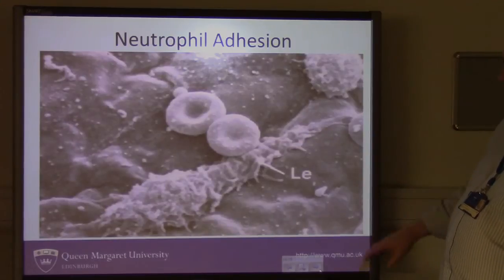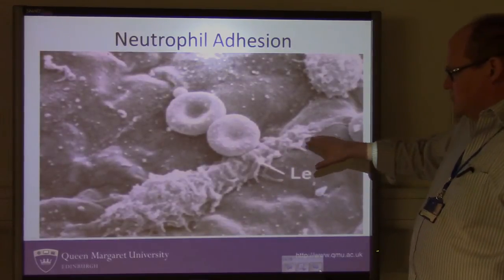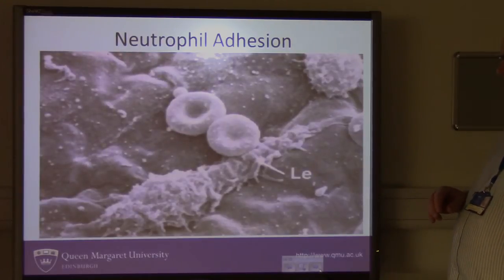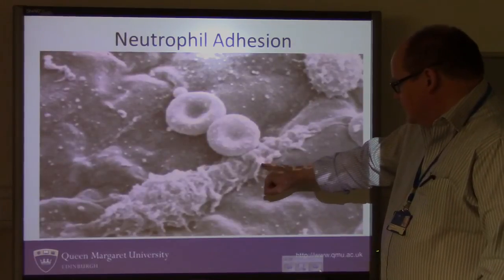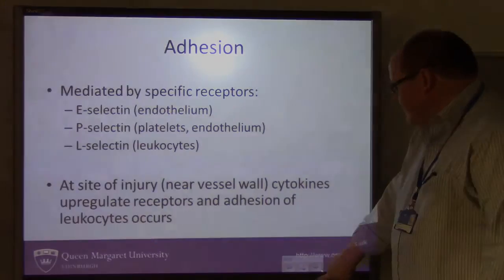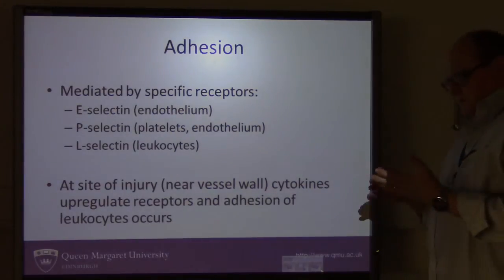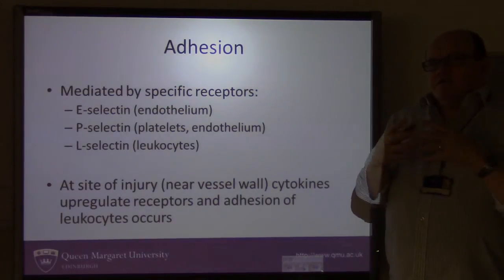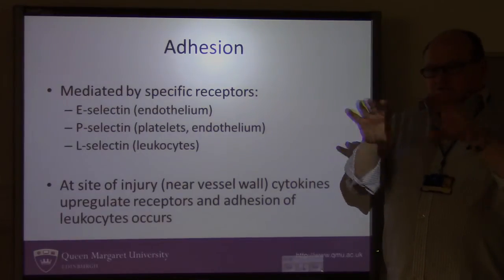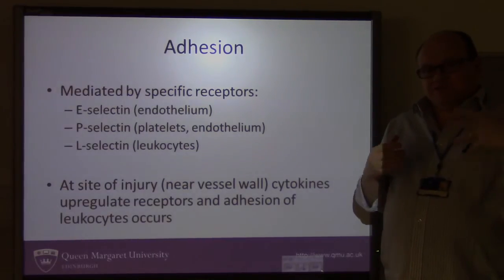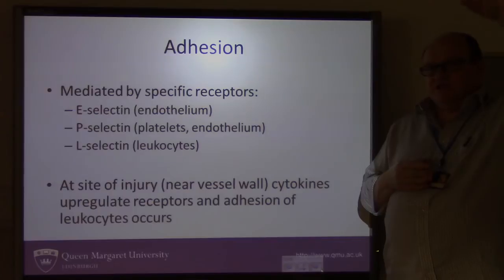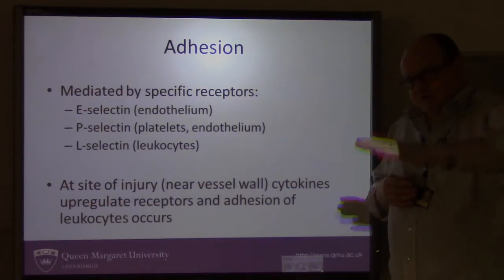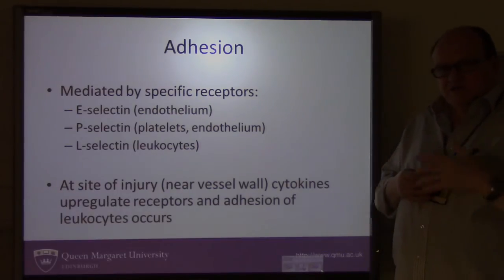This photomicrograph shows white cells sticking onto the blood vessel wall — you can see the leukocytes catching on. The endothelial cells in the lining have been activated by a stimulus from the inflamed area. What actually causes the leukocyte to go from flowing along through the blood vessel to coming down and rolling and sticking to the membrane involves specific receptors.